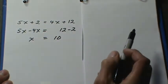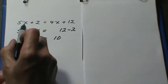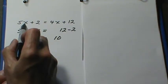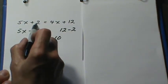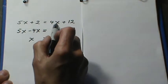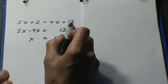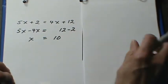If you want to check, it's very easy to check this. Just take the 10 and put it back in here. 5 times 10 is 50, plus 2 is 52. If you put the 10 in here, you have 40 plus 12, which again is 52.